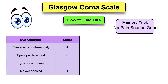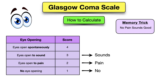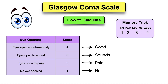You can use the memory trick mnemonic 'no pain sounds good.' No represents a score of one — no response. Pain represents two — response to pain. Sounds represents three — response to sound. Good represents four — the eyes are opening spontaneously. So remember the phrase: no pain sounds good — one, two, three, four.